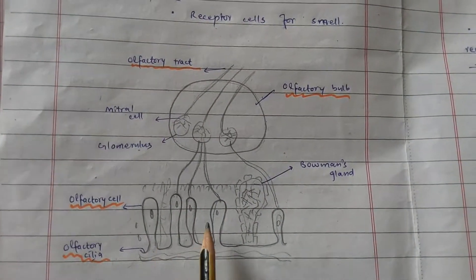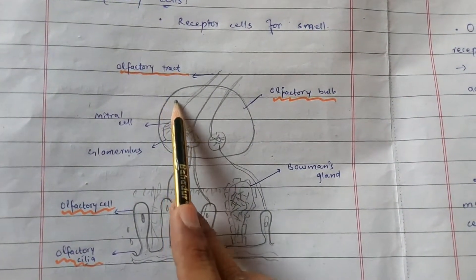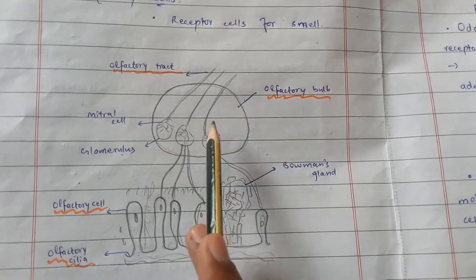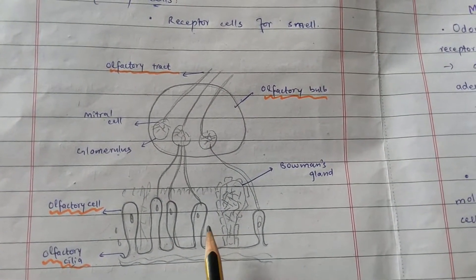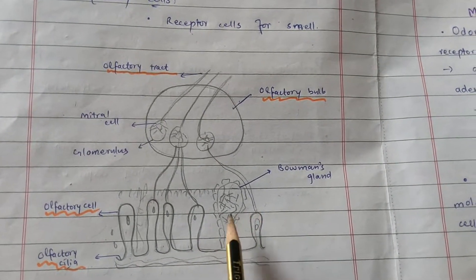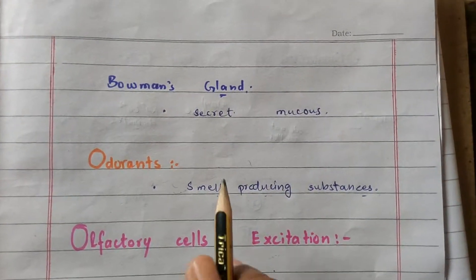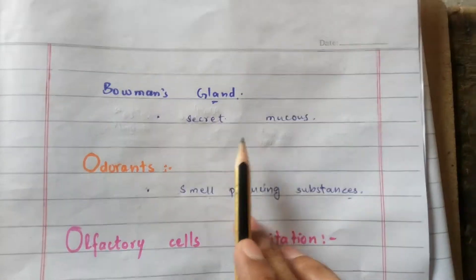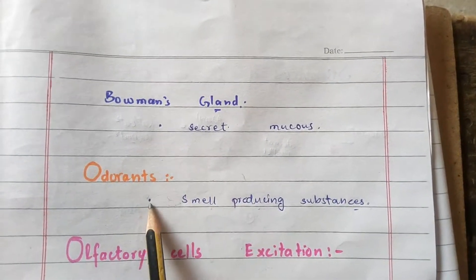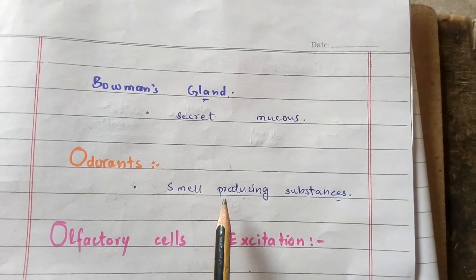Here you can see in this diagram: these are the olfactory cilia, these are the olfactory cells, and this is the olfactory tract from where the electrical signals are sent to the CNS. In between the olfactory cilia there are the Bowman's glands, which are important for the secretion of mucus. The olfactory cells are excited by odorants, which are the smell-producing substances.